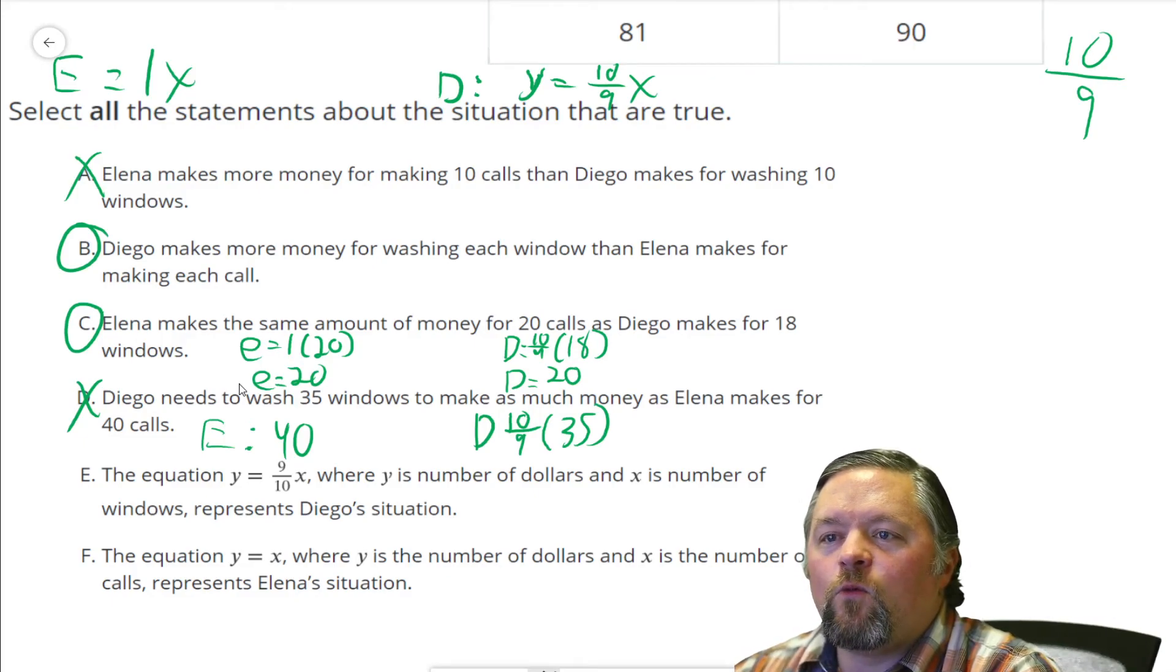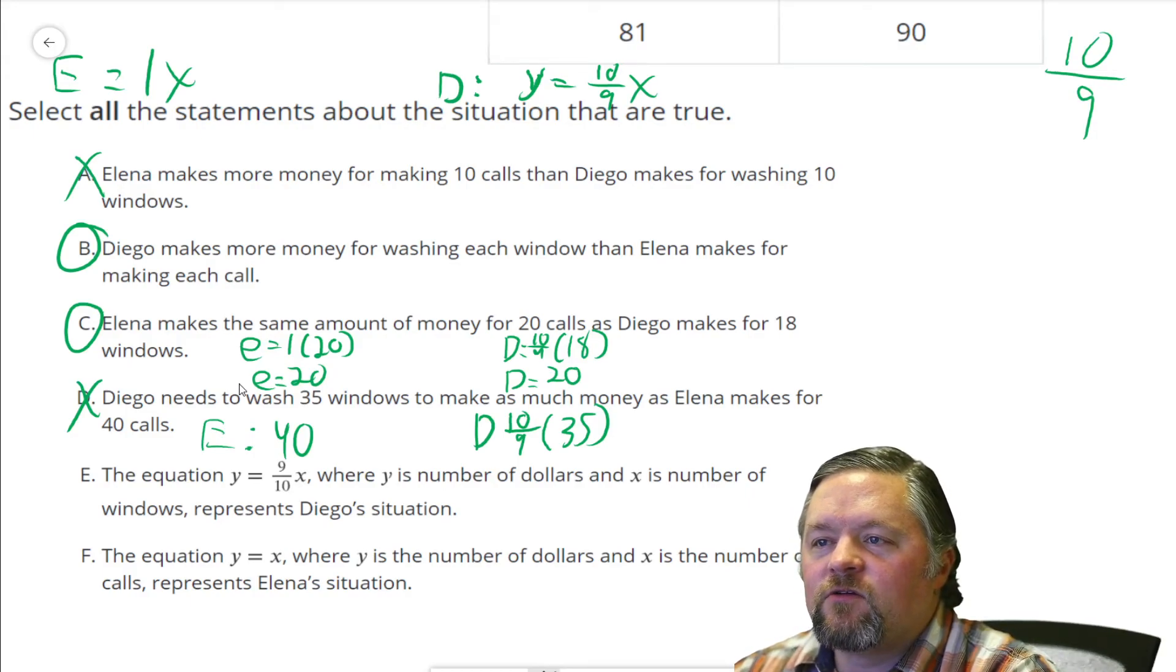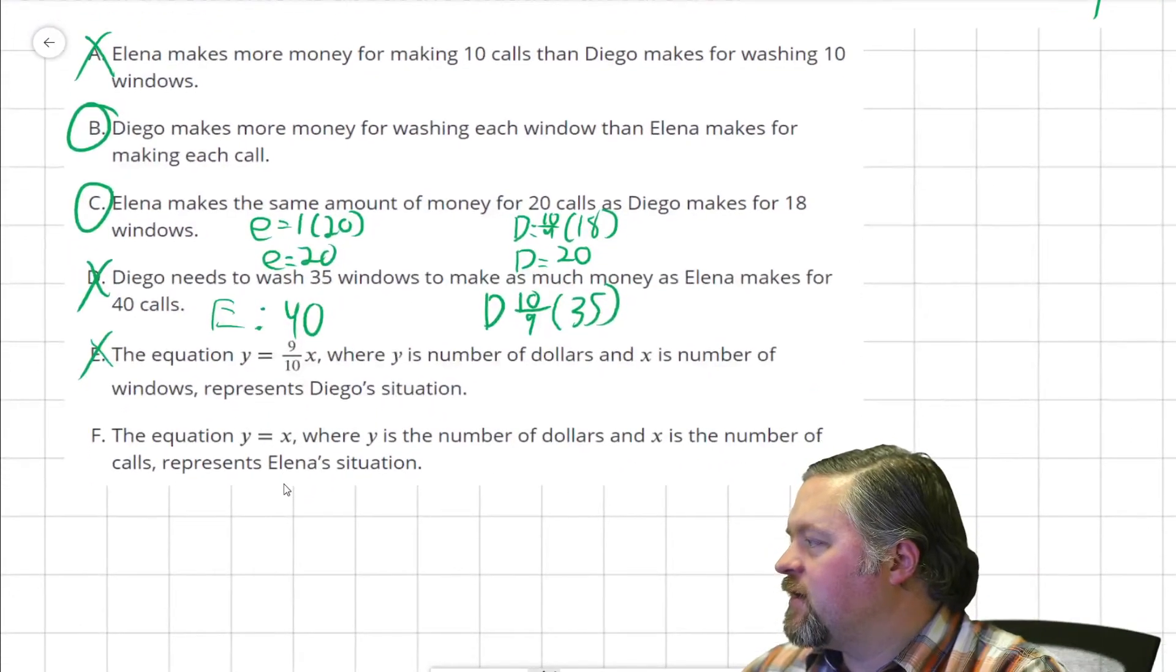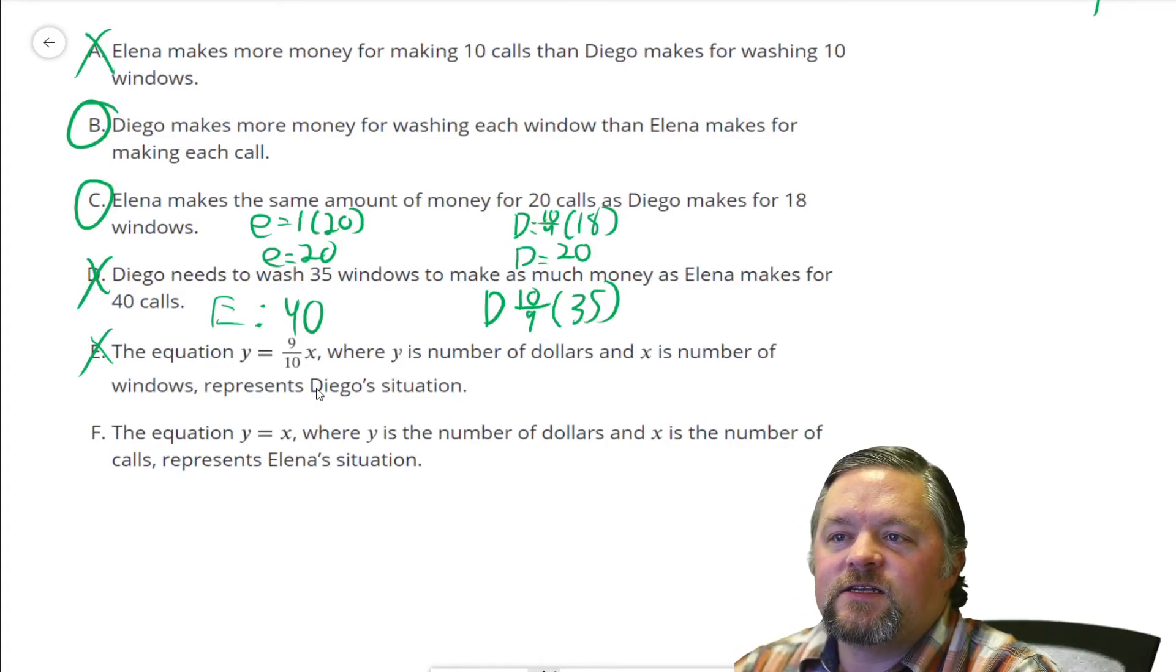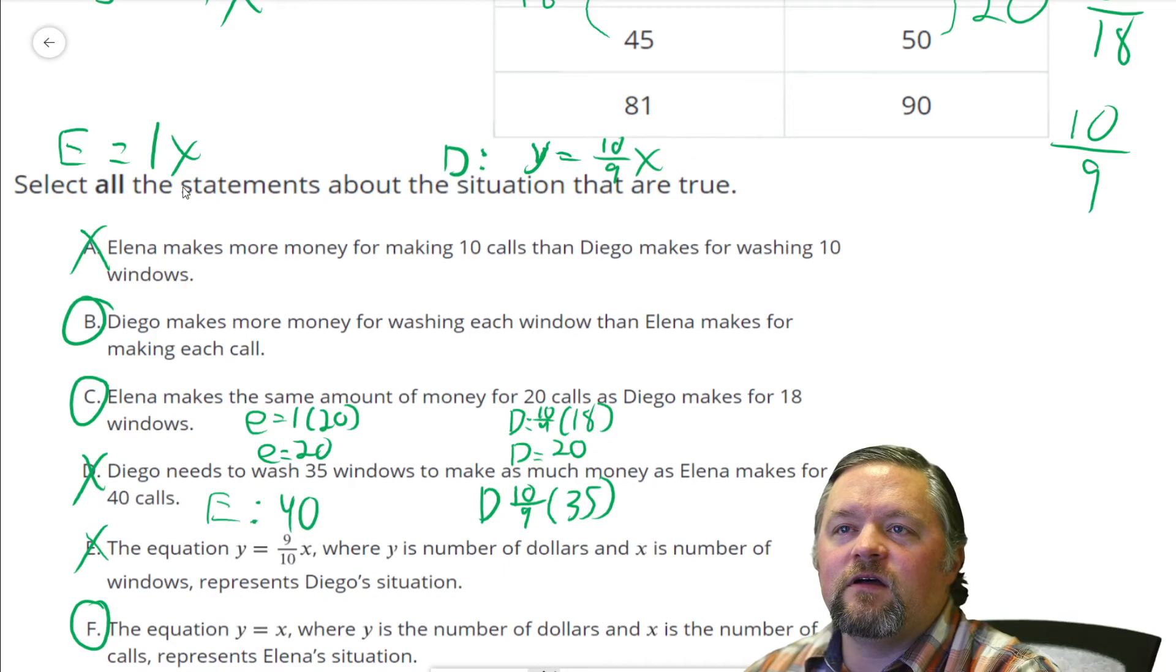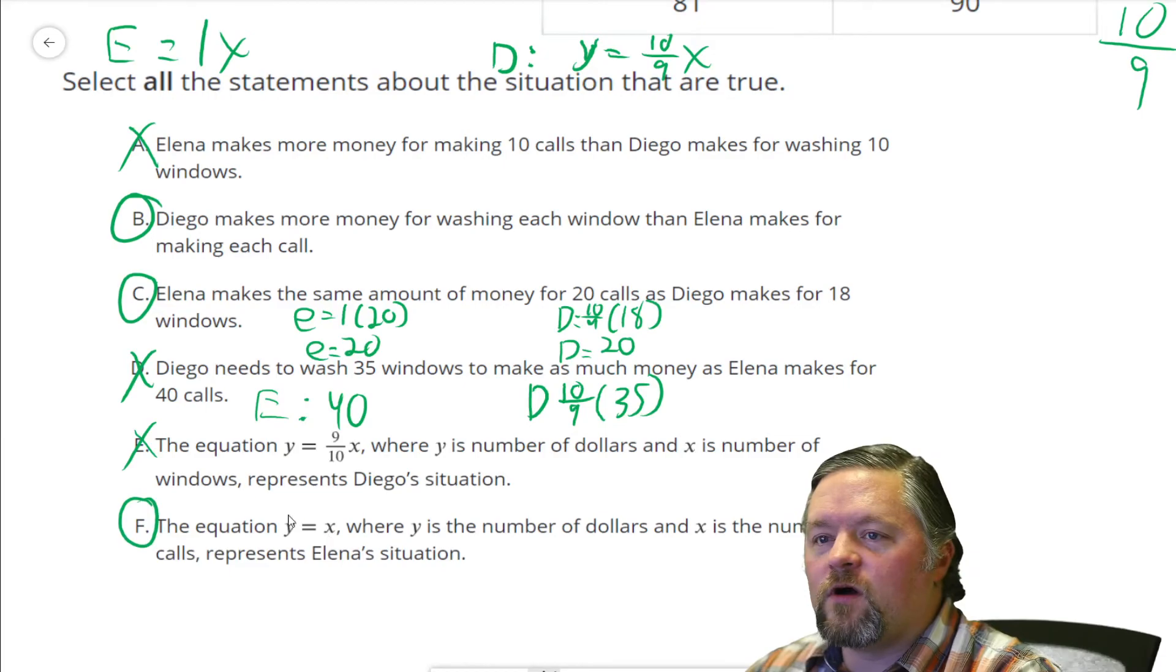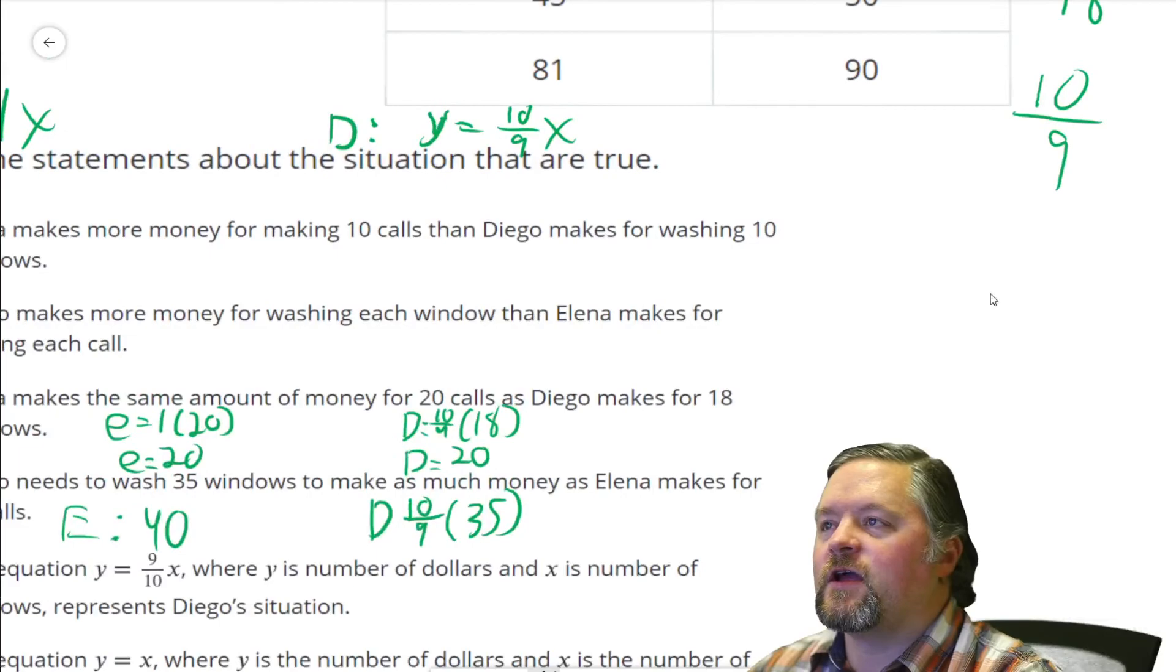The equation Y equals 9/10ths X where Y is the number of dollars and X is the number of windows represents Diego's situation. No, it doesn't. We already figured that out. He makes 10/9ths not 9/10ths. The equation Y equals X where Y is the number of dollars and X is the number of calls represents Elena's situation. Yes, it does. That's the same equation we had. We had Elena gets 1X. If there's no 1 in front of the X, if there's no number in front of the X, then it's a 1. There's 1X there.